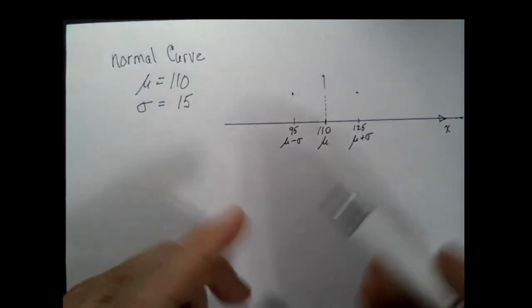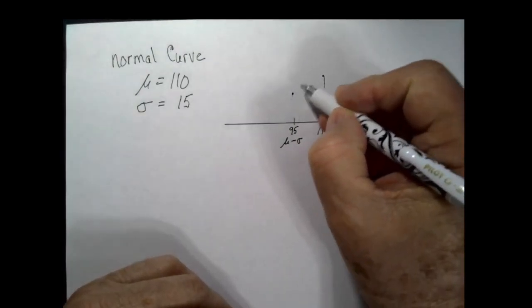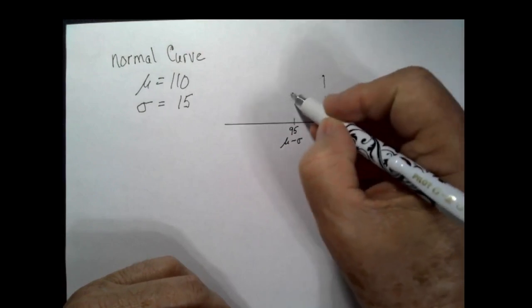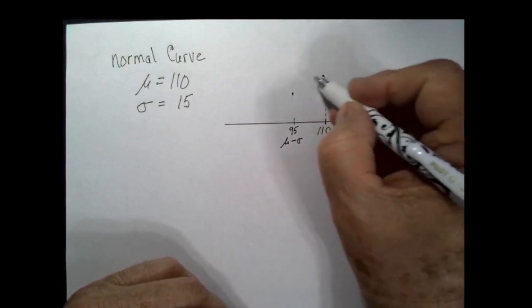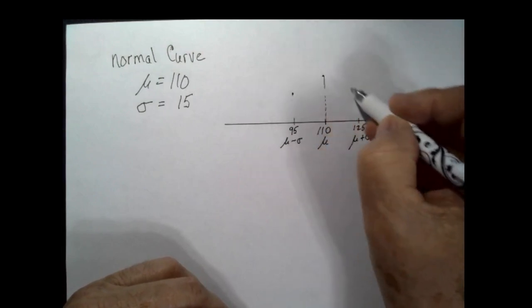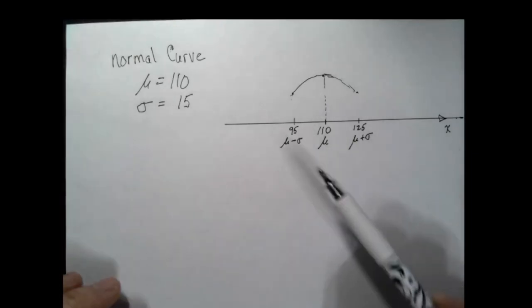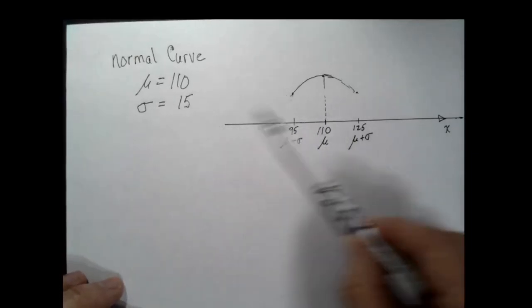An interesting fact about normal curves is that within one standard deviation of the mean, the curve is concave down. Outside of one standard deviation, it's concave up.